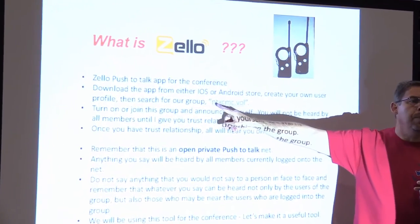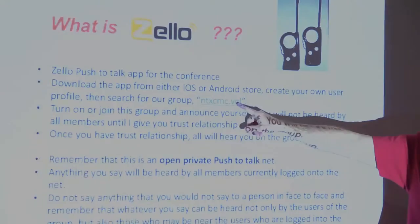If you've got a smartphone, go to the website for either iOS or Android and download the Zello app. You log in, create your own profile for yourself, and then once you're logged in, you'll go to the group session and look for that NTXCMC.VAL radio net.